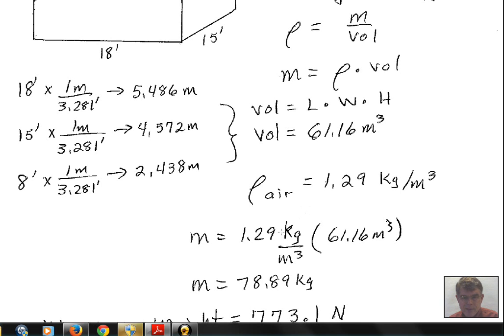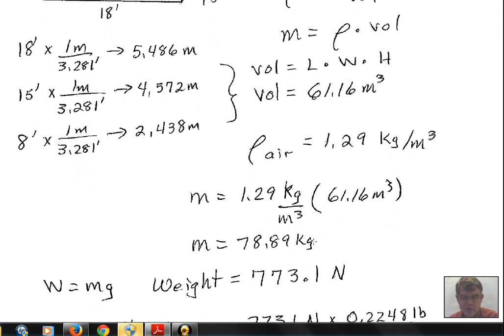So our mass then is the density times the volume. 1.29 times the 61.16. The mass of air in the room is 78.89 kilograms.